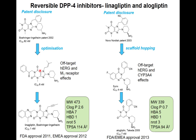Other reversible DPP-4 inhibitors likely originated from screening. A compound disclosed by Boehringer Ingelheim was optimized into a more active compound, but that compound also bound to the hERG ion channel. Molecules binding to hERG carry the potential for causing cardiac arrhythmia; therefore in drug discovery, hERG binding is screened early and compounds with this property are discarded. Boehringer Ingelheim then developed linagliptin, a very potent DPP-4 inhibitor without hERG binding.